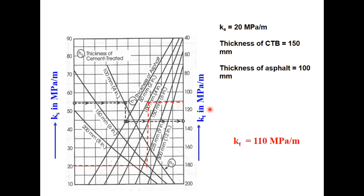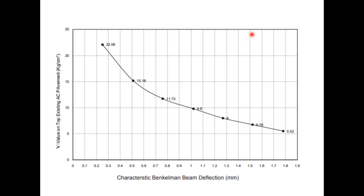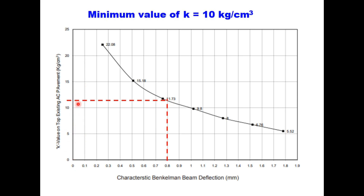Field engineers sometimes prefer to use Benkelman beam deflection data rather than plate load test for subgrade k-value. The deflection value can also be used to determine k-value using a chart provided by the Corps of Engineers. For example, with a characteristic deflection of 0.8 millimeter, you can find the value of kt, the k-value on top of the existing asphalt pavement. The minimum value of k should be taken as 10 kg per centimeter cube.